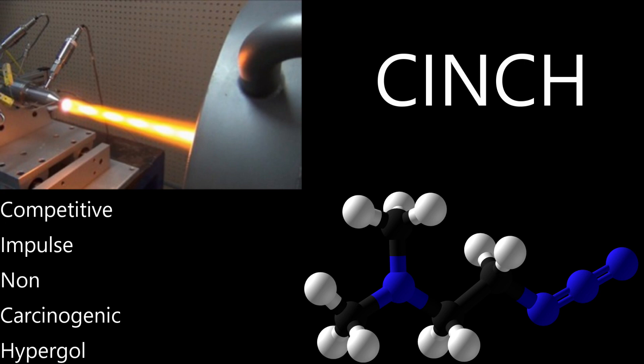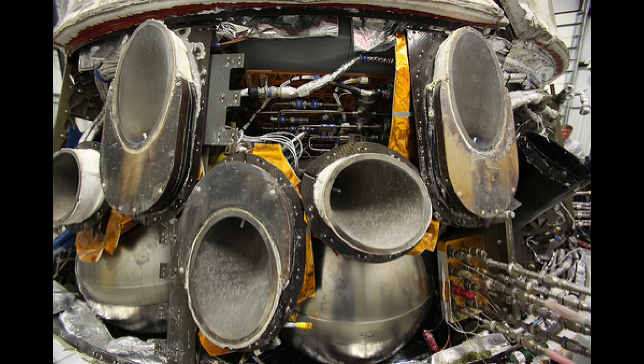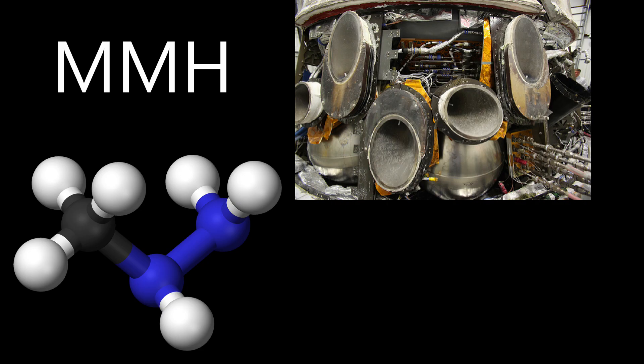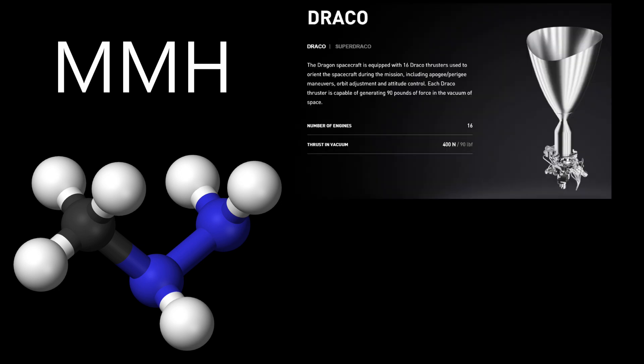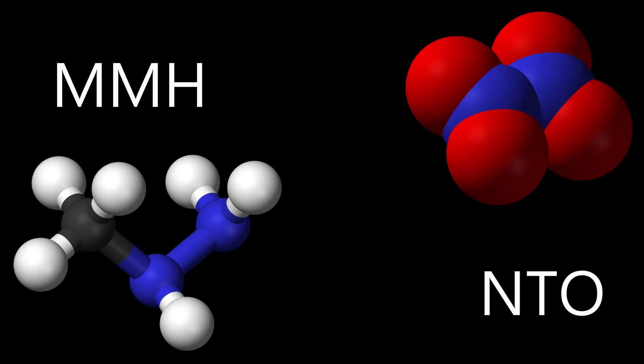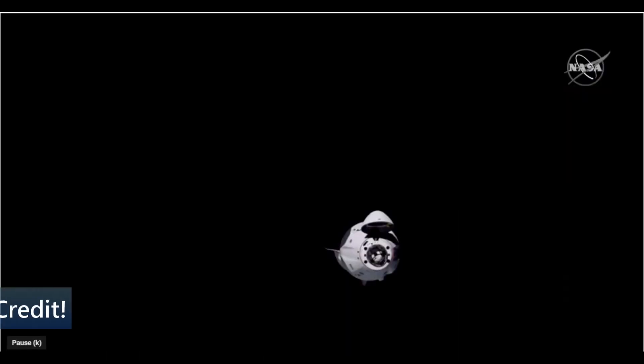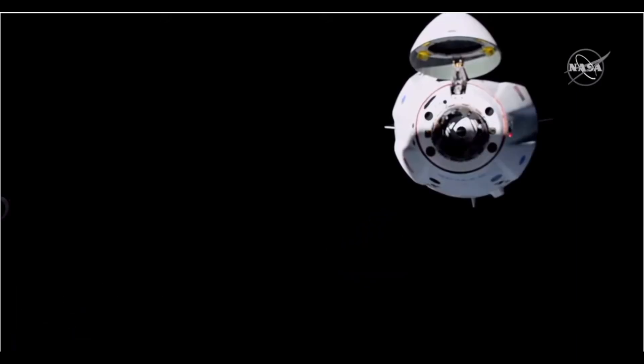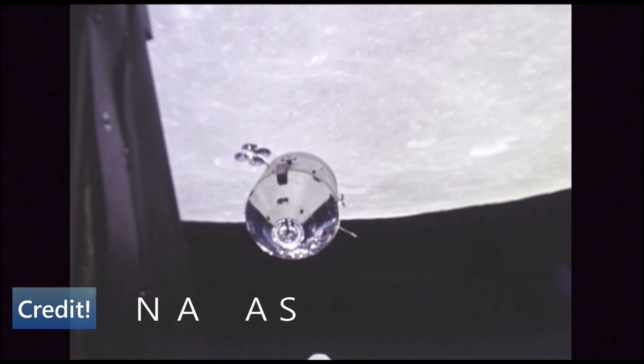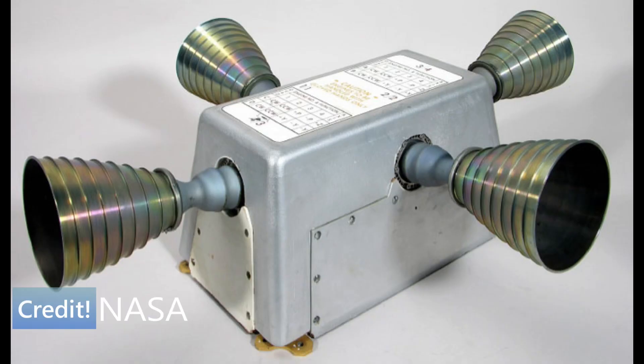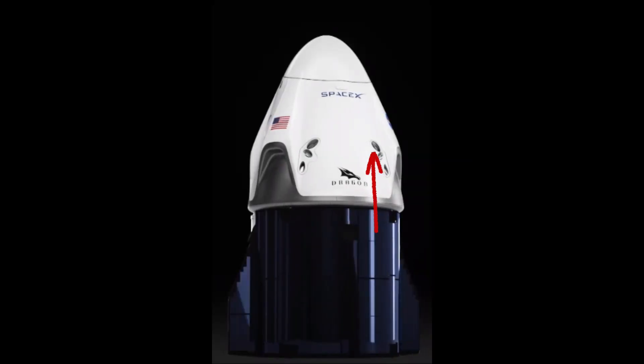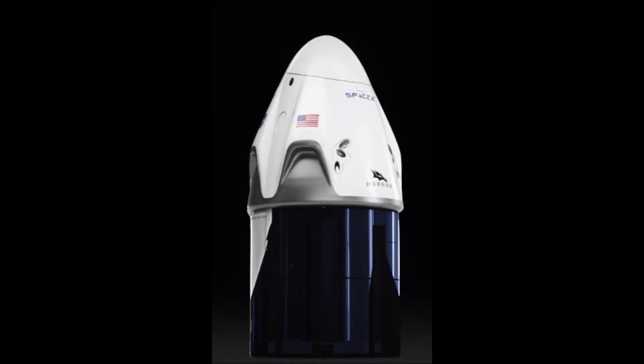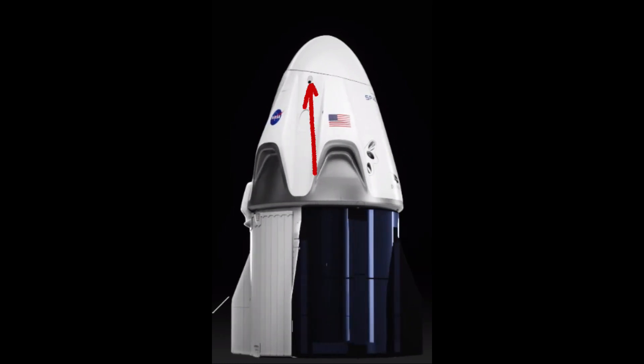The Draco thrusters on the SpaceX Dragon 2 capsule use monomethyl hydrazine or MMH and nitrogen tetroxide or NTO. These are small engines used to reorient the craft in space. You saw them firing constantly as the Dragon 2 capsule came into dock with the International Space Station on its historic flight on 30 May 2020. Draco thrusters generate 400 newtons of force and are similar to the RCS thrusters used on the Apollo service and lunar modules that use the classic Marquardt R4D engines. There are 16 Draco engines on the Dragon 2 capsule, clustered in functional groups around the body of the capsule.